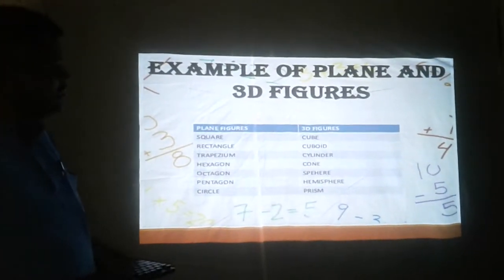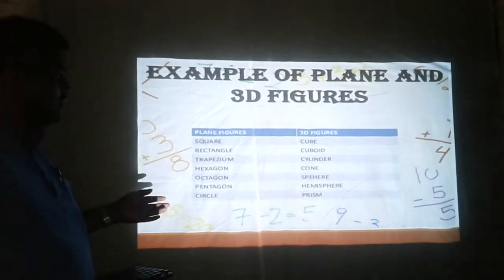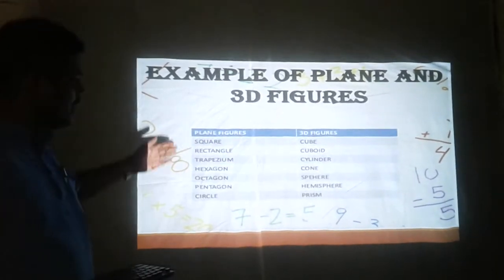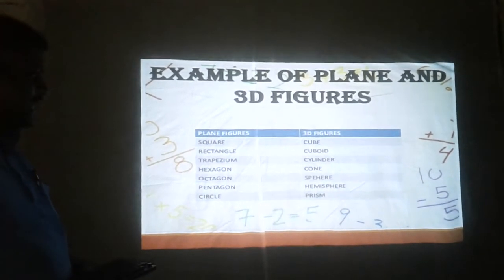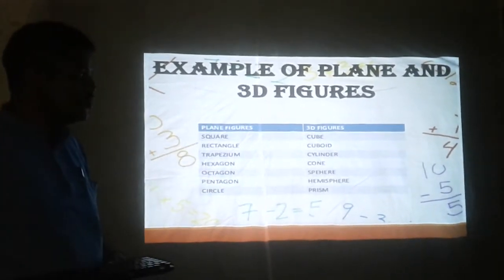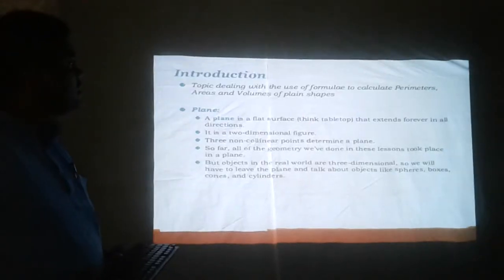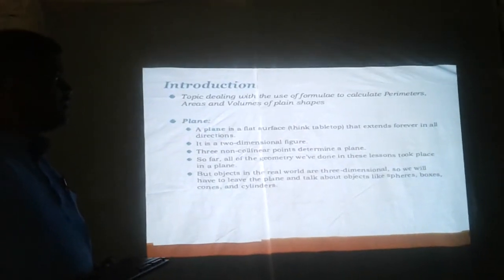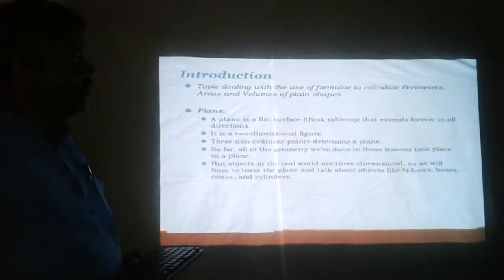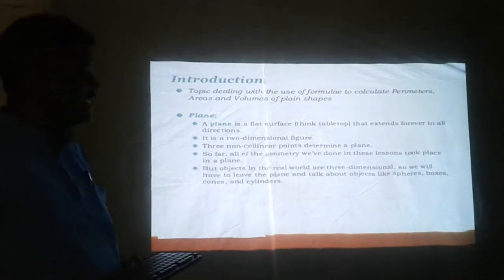From there, we can easily call so many examples for plane figures and 3D figures. Plane figures: we can describe rectangle, trapezium, hexagon, and so on. And 3D figures: cube, cone, cylinder, etc. Now, this topic is dealing with the use of formula to calculate perimeters, areas, and volumes of plane shapes. This is the mensuration we are going to study.